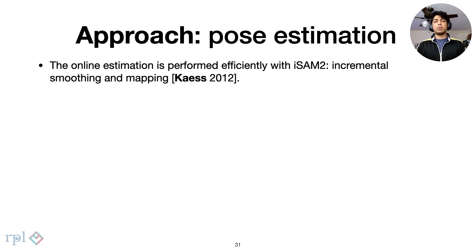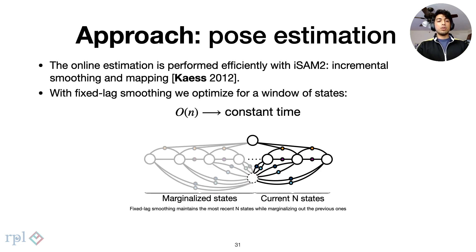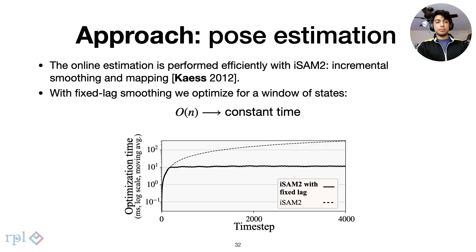The least squares problem can be solved efficiently with iSAM2, or incremental smoothing and mapping. This incrementally updates previous matrix factorizations with new measurements at each time step. For real-time operation, we employ a fixed-lag smoother to optimize for a window of poses, while efficiently marginalizing out past states.